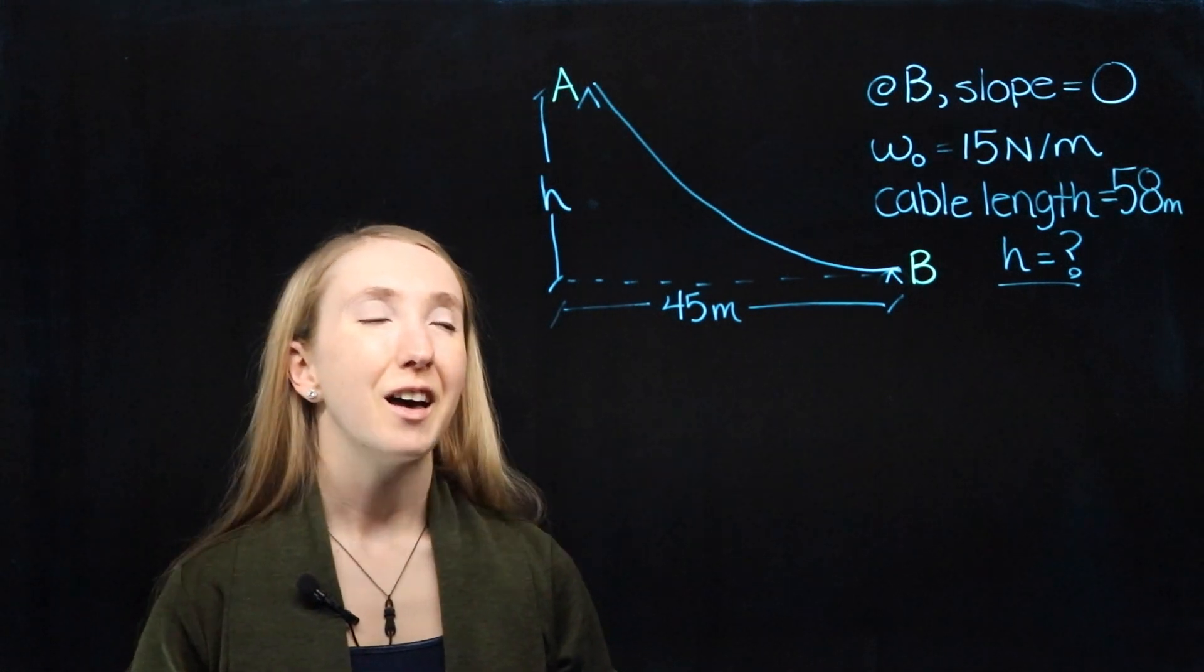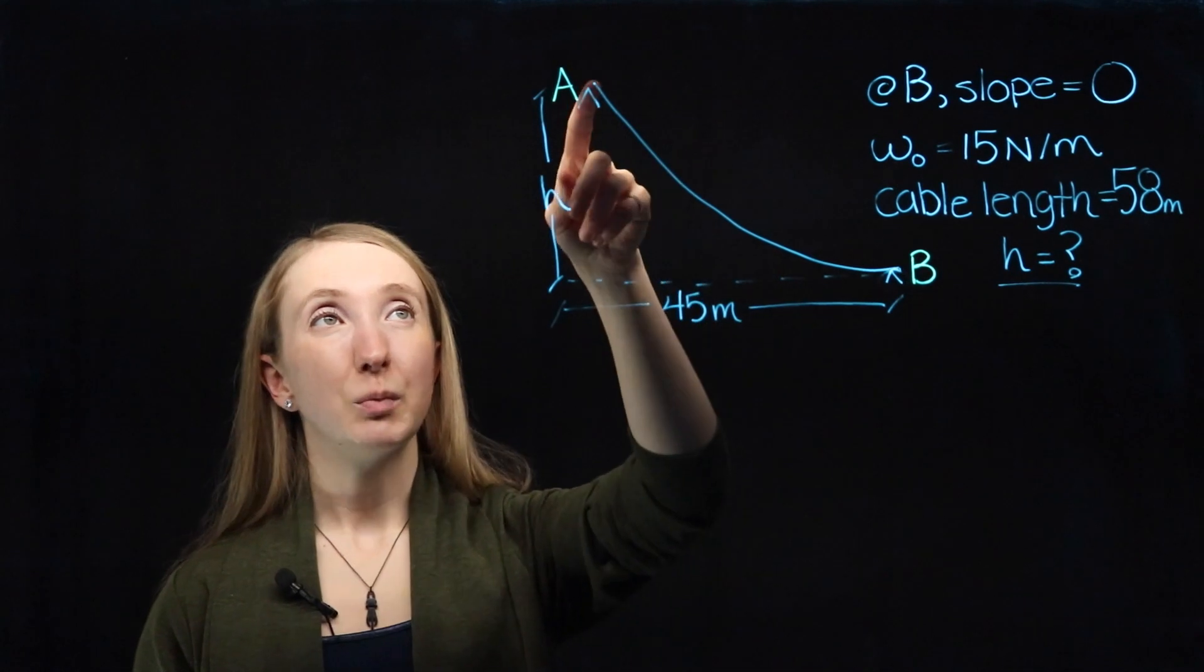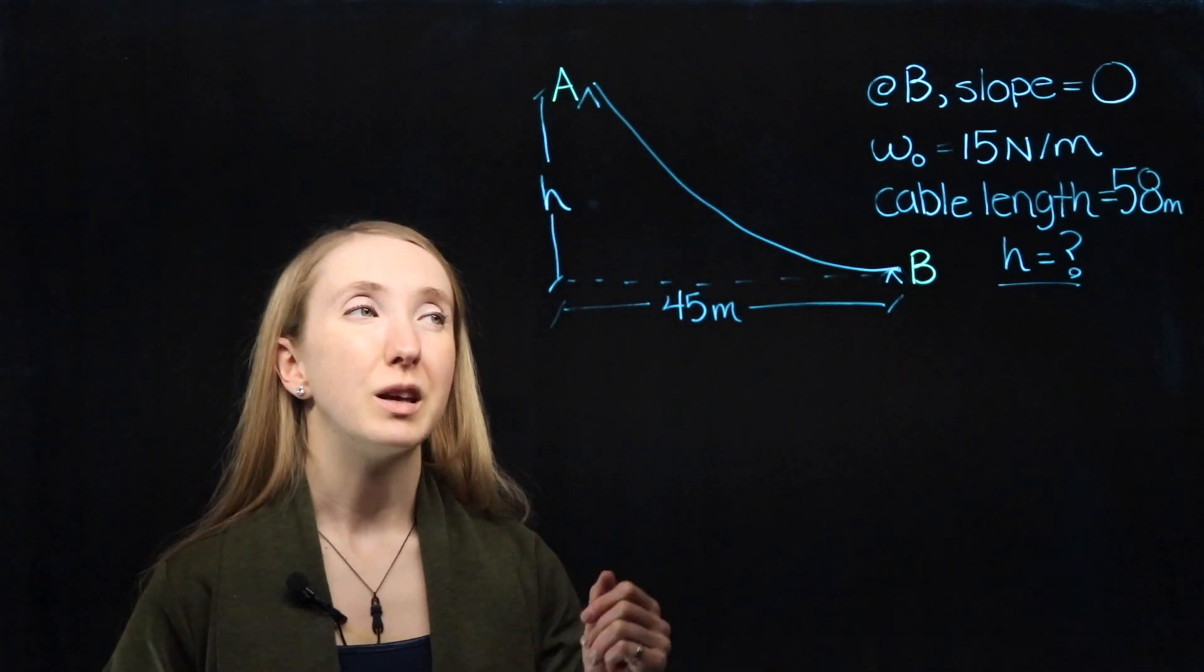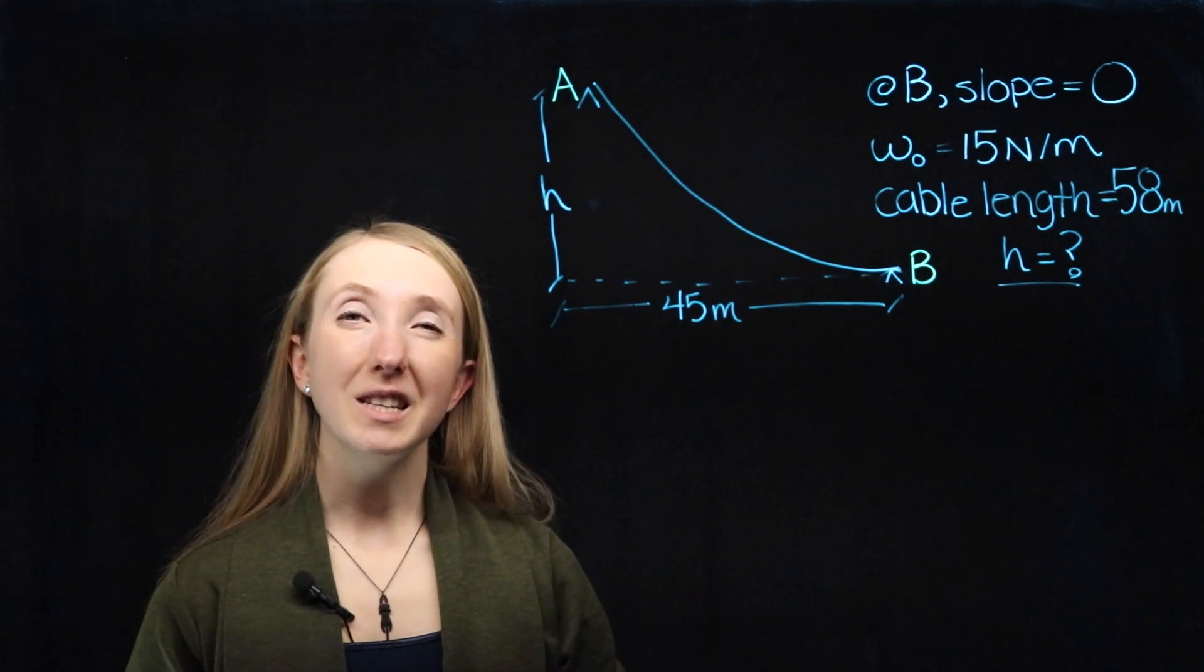For our first example, we have a cable connected to the ground at B and a raised support at A. We're told that the slope of the cable is 0 at B and the cable weight is 15 N per meter.